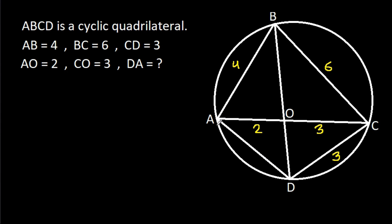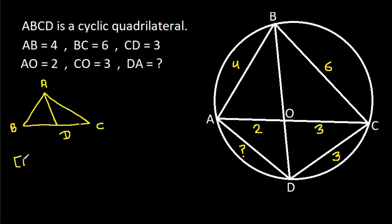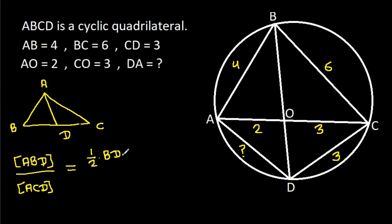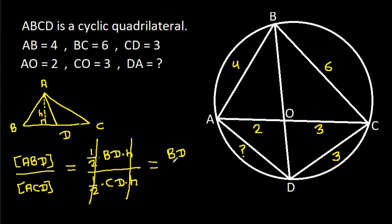Then we have to find BD. In any triangle ABC and D, the area of ABD by area of ACD will be equal to: area of ABD is 1/2 times base BD times height H, divided by area of ACD which is 1/2 times base CD times height H. The 1/2 and H cancel, so it equals BD by CD.